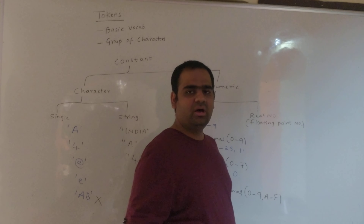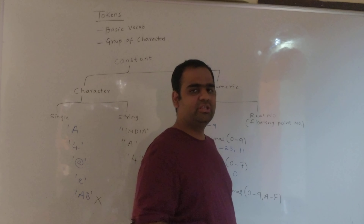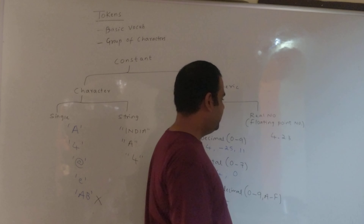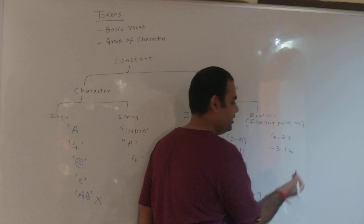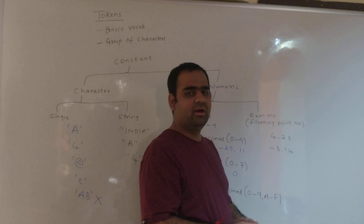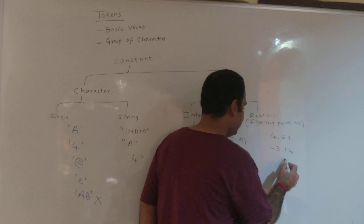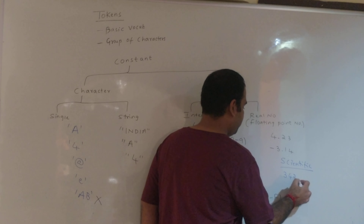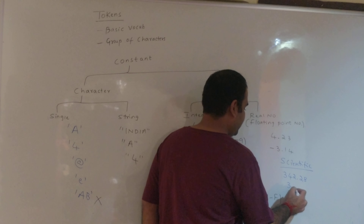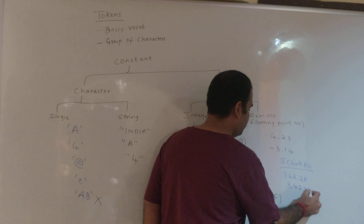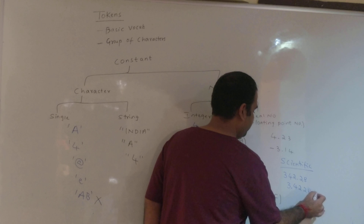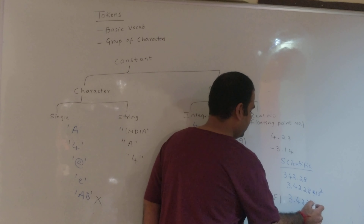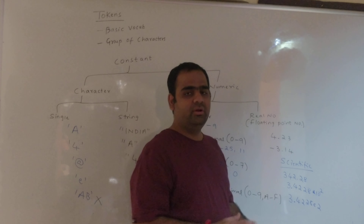The next type of constants are real numbers, also called floating point numbers. Real numbers have a decimal point associated with them. For example, 4.23 is a floating point number, and minus 3.14 is a floating point number. These floating point numbers can also be represented in scientific notation. For example, 342.28 in mathematics is written as 3.4228 × 10². In programming we write it as 3.4228E2, where E2 means 10 to the power 2.